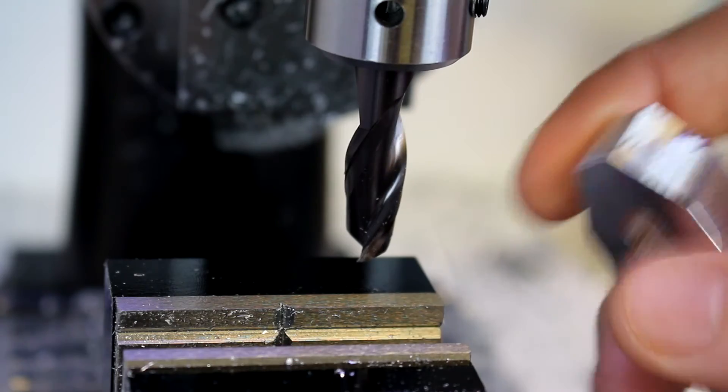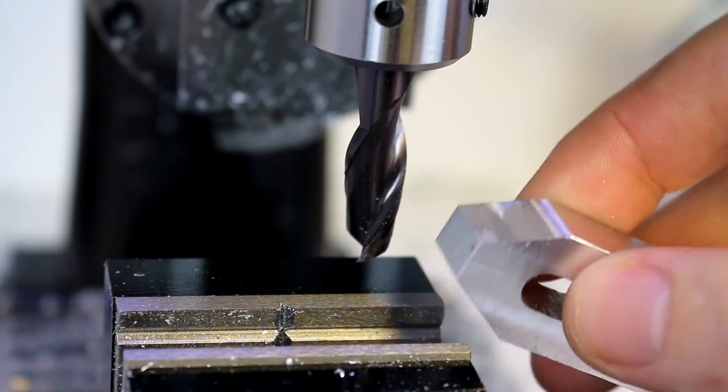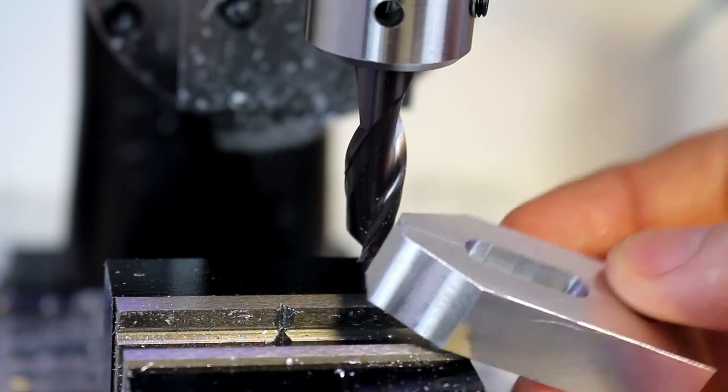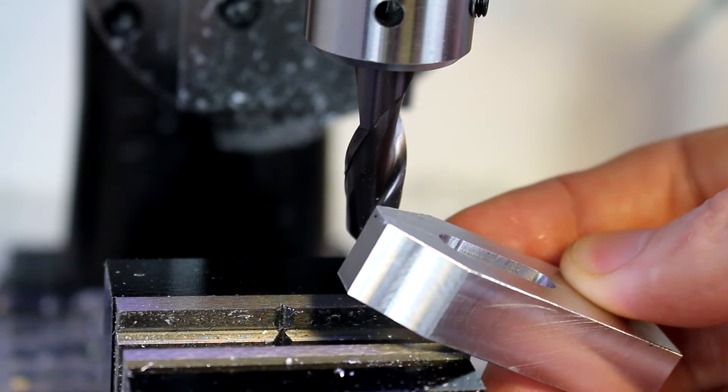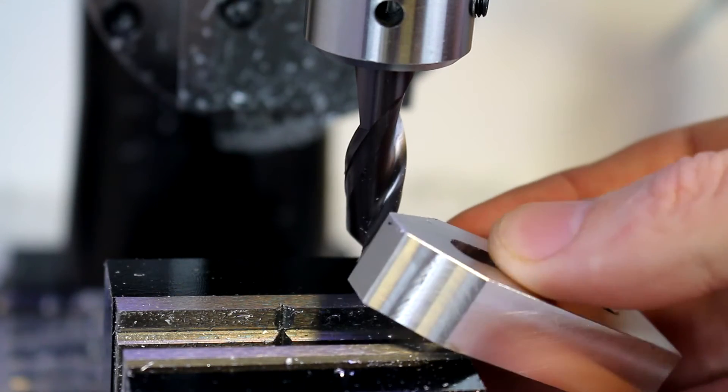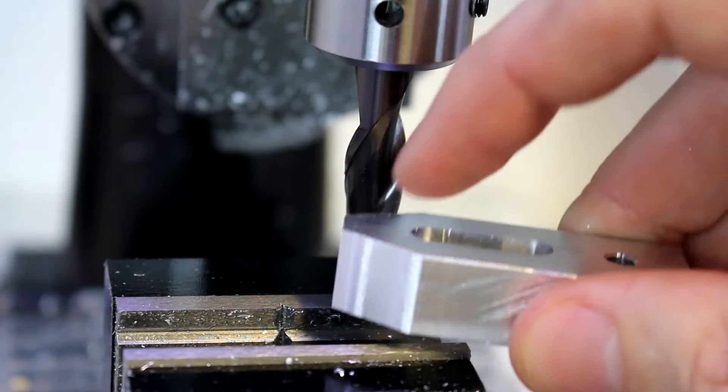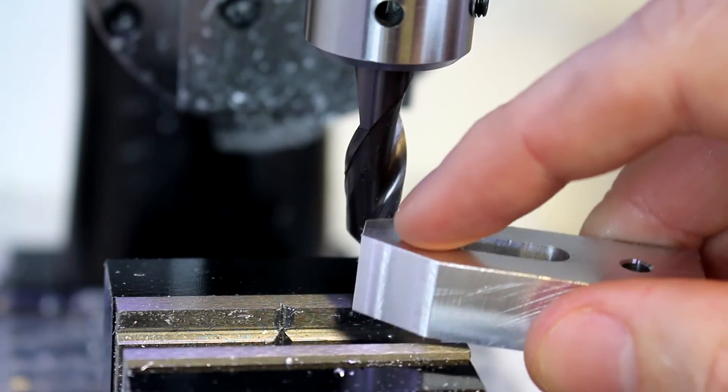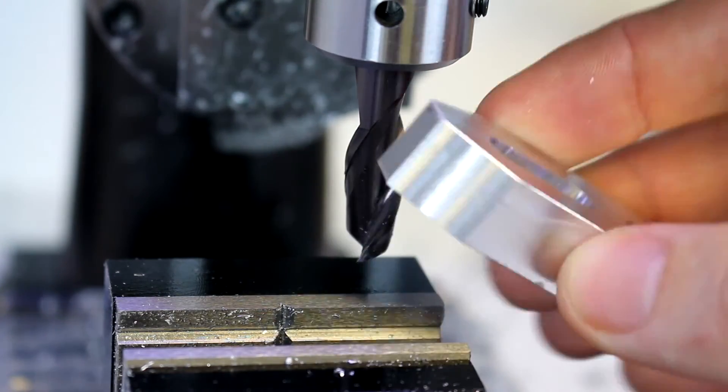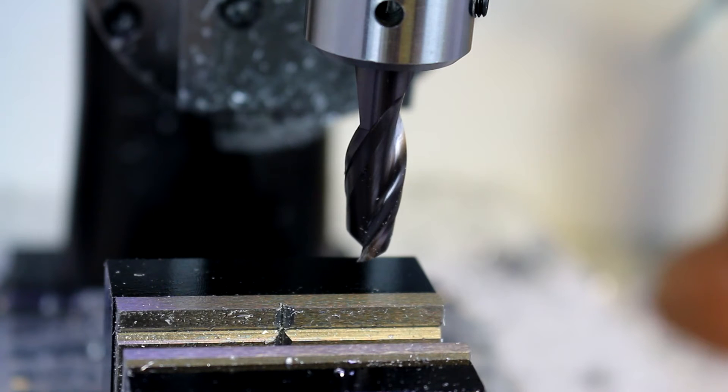We didn't have it clamped super well either. Having it supported would have been better. But that gives us that angle. Now if we wanted to we could clamp it in and do that angle as well. But I'm going to switch to using an angle plate rather than just kind of propping it up in there. And we'll do that after a couple of other cuts here.